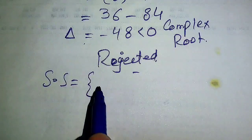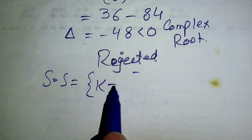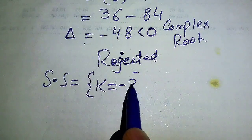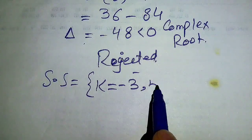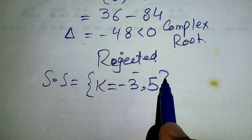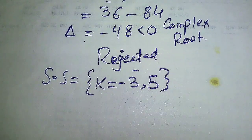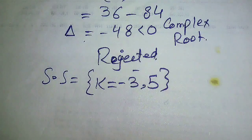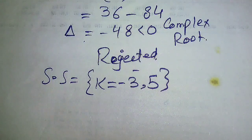Therefore, the only real solutions of the given equation are k = -3 and k = 5. This is our final answer. Thank you so much for watching this video — please subscribe to my channel for more exciting videos.